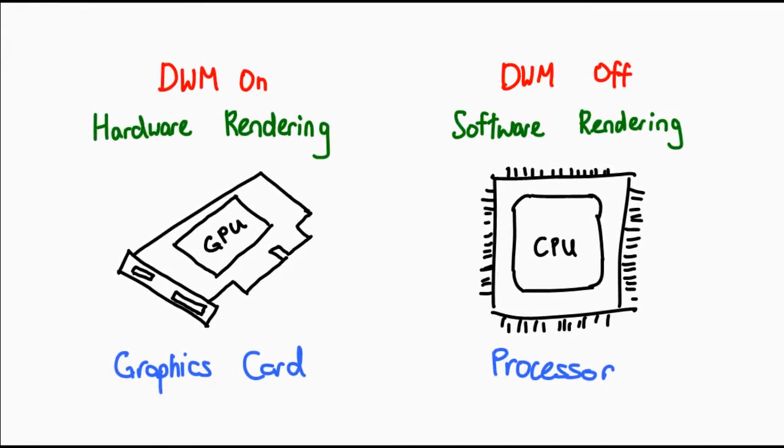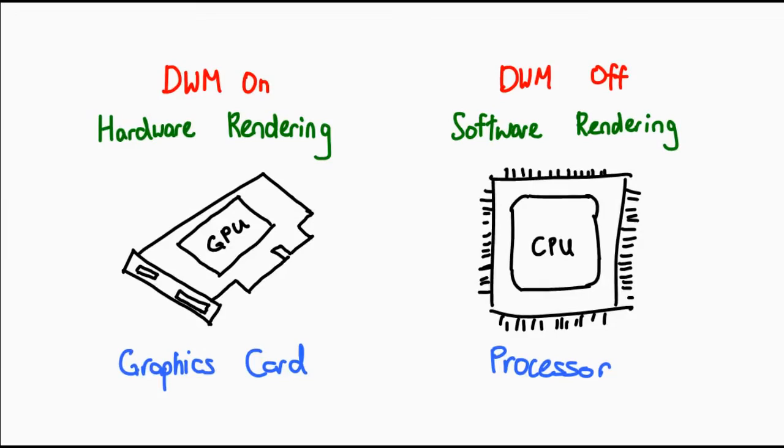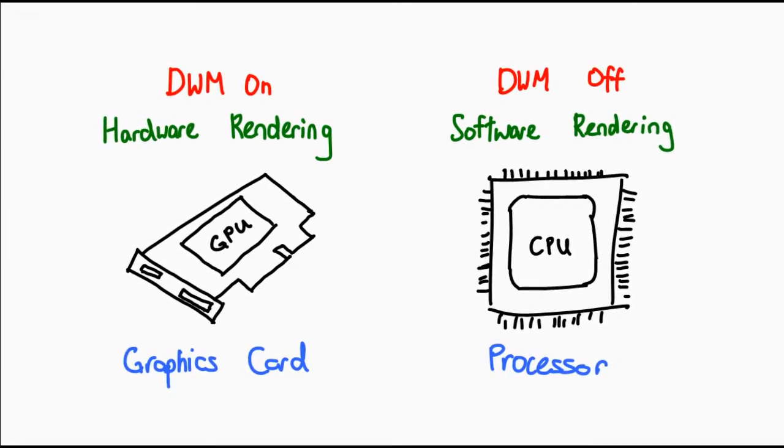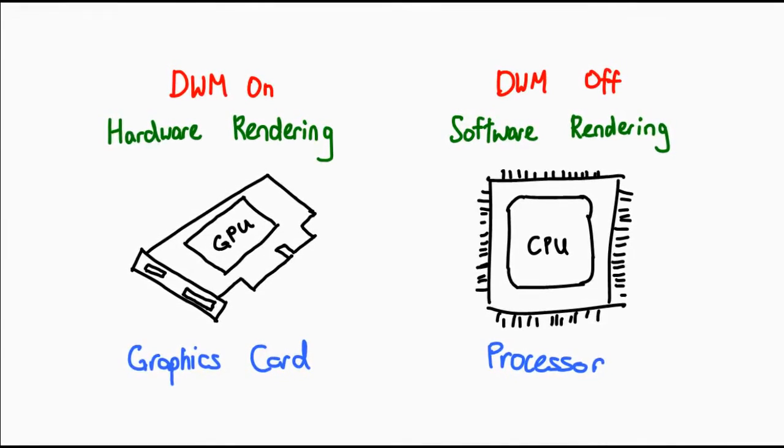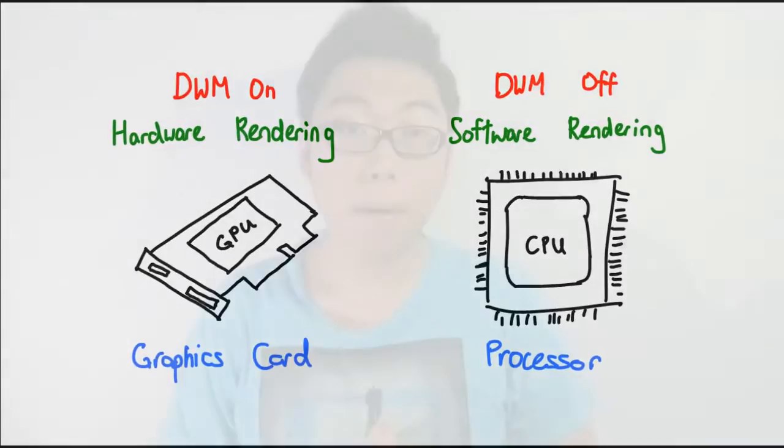If you have DWM on, you're using your GPU to render your desktop and all your windows. If you have it off, the rendering happens on your CPU instead. Remember what I mentioned earlier about V-Sync — the drawing process should happen on the hardware portion. When you have DWM off, essentially that is not happening, so V-Sync essentially did not work at all, even if I went into my media player and tried to turn it on. It just wouldn't work, because all the rendering is happening at a software level.